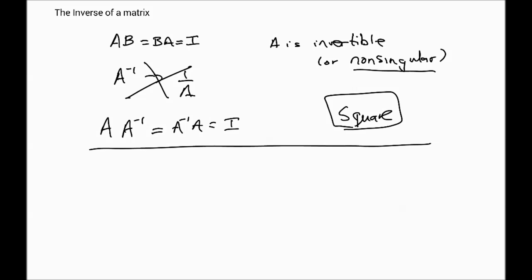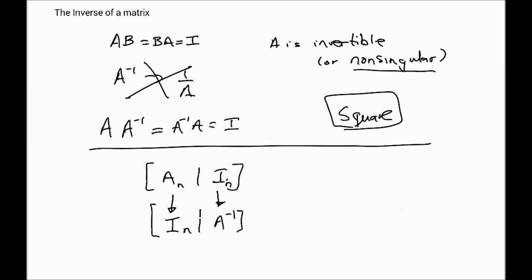To compute the inverse of a square matrix, form the augmented matrix [A | I], where A is your n-by-n target matrix and I is the n-by-n identity matrix. Then perform elementary row operations on A to bring it to reduced row echelon form. If there are no rows of zeros in RREF, the matrix must be the identity. If you successfully convert A into the identity matrix, those same row operations performed on the identity matrix will give you the inverse of A.